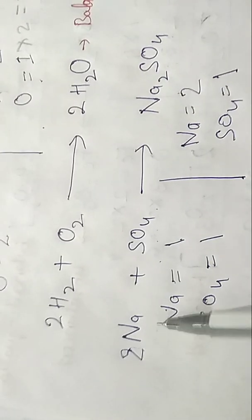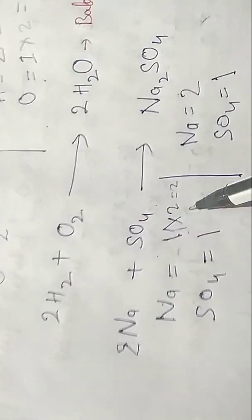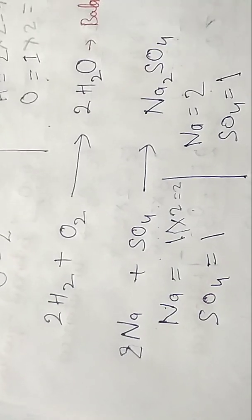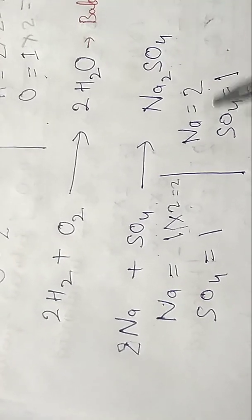Now it is balanced. You can see we have to multiply 2 here. Na is two here, Na is two here. SO4 is one here, SO4 is one here. Now it is balanced.